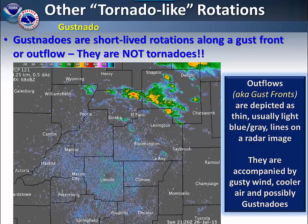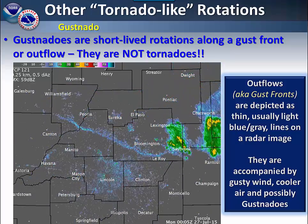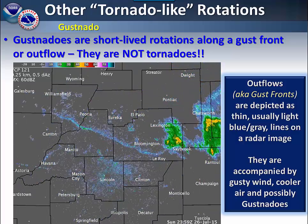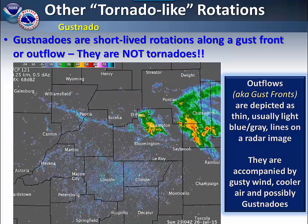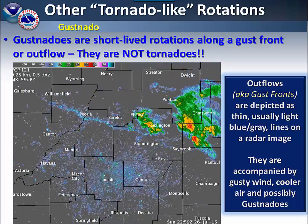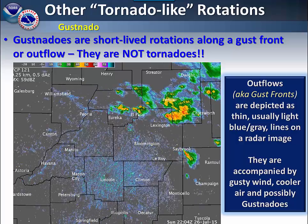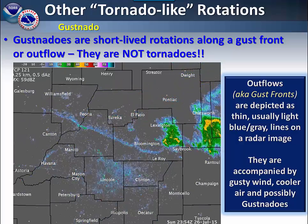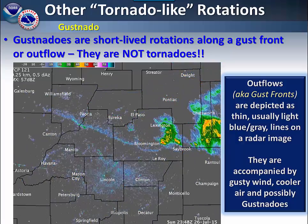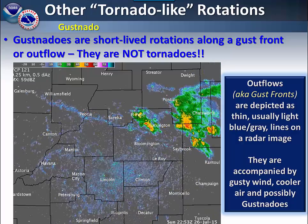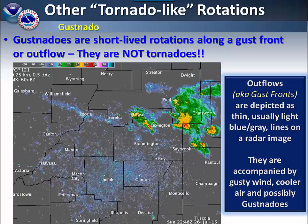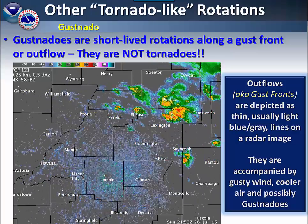Another type of non-supercell tornado that you may see — or it's actually more of a tornado-like situation — is what we refer to as a gustnado. These are short-lived rotations along what we call a gust front or an outflow boundary. On radar you can see these particular situations as a thin blue or gray line depending on the color curve of the radar image you're looking at. Here the outflow is pushing from north to south across the area and has recently passed through Peoria and Bloomington. Gust fronts are accompanied by gusty winds, cool air, and possibly gustnadoes.